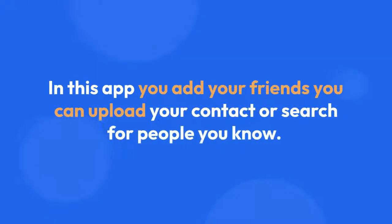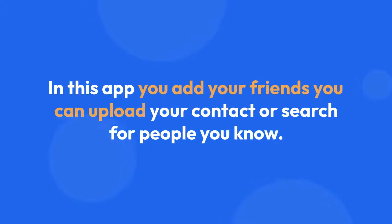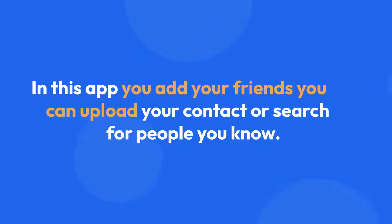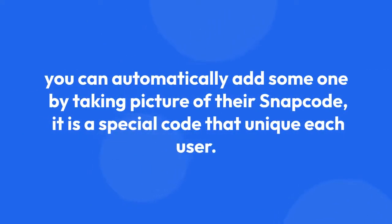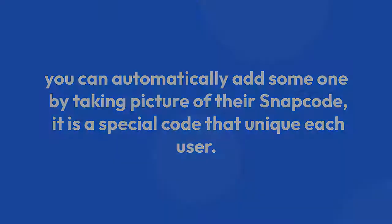In this app you add your friends — you can upload your contacts or search for people you know. You can automatically add someone by taking a picture of their Snapcode, which is a special code that is unique to each user.